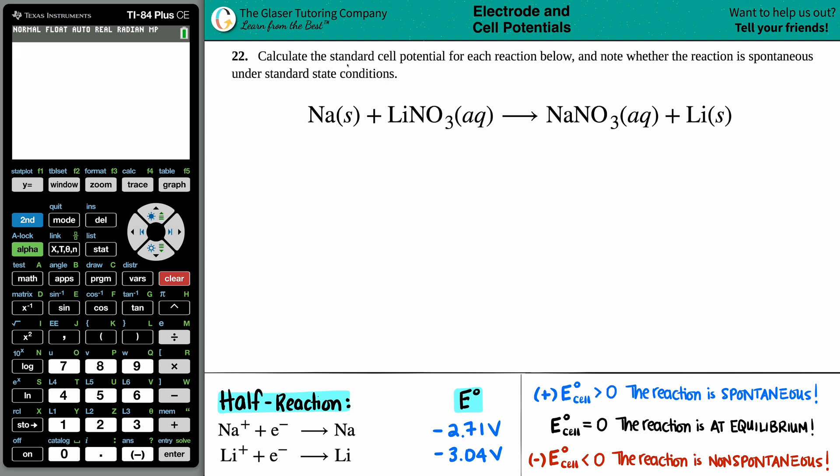Number 22. Calculate the standard cell potential for each reaction below and note whether the reaction is spontaneous under standard state conditions. And then we have this reaction right here: Na solid plus LiNO3 aqueous yields NaNO3 aqueous plus Li solid.